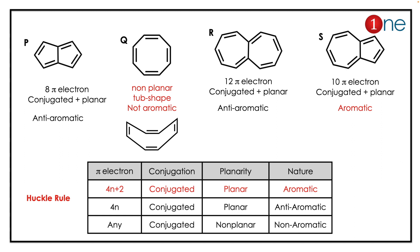P has 8 pi electrons in conjugation and is planar, so it is anti-aromatic. Q is tricky because it has a non-planar tub shape, so it is a non-aromatic compound. Looking at R, it is a fused seven-membered system with 12 pi electrons in conjugation and is planar, so it is also anti-aromatic.